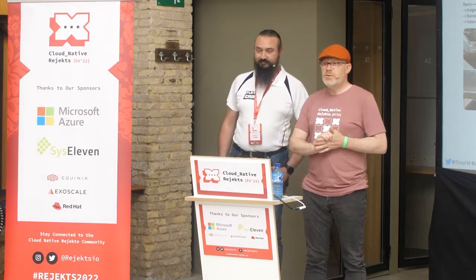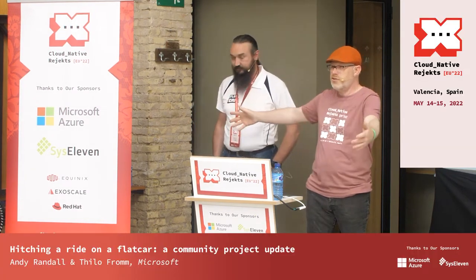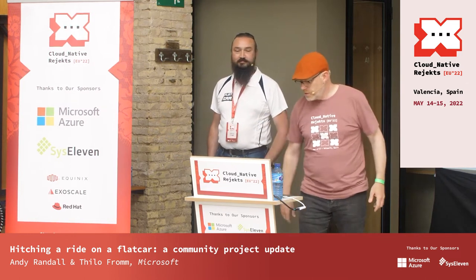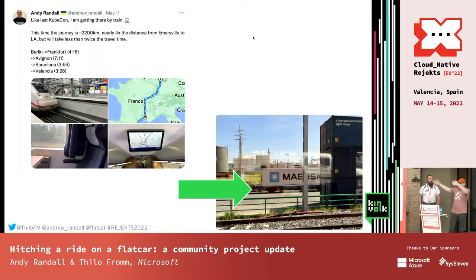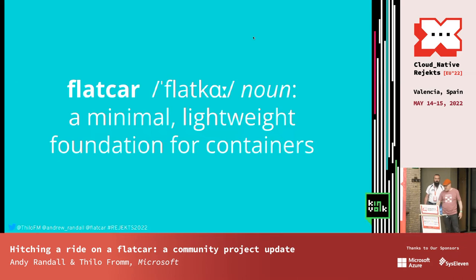For those of you who have followed me on Twitter, you may see I got here to Valencia from Berlin by train. And if you take a train and look out of the window at any of the goods yards or places, you might see shipping containers. You will see pictures like this — a container — and how do they get it on the rails? Well, that thing it's sitting on is called a flat car. So that's where the name Flatcar comes from, for the Flatcar Container Linux. It's a minimal lightweight foundation for running containers on. Pretty simple, makes sense when you know that.